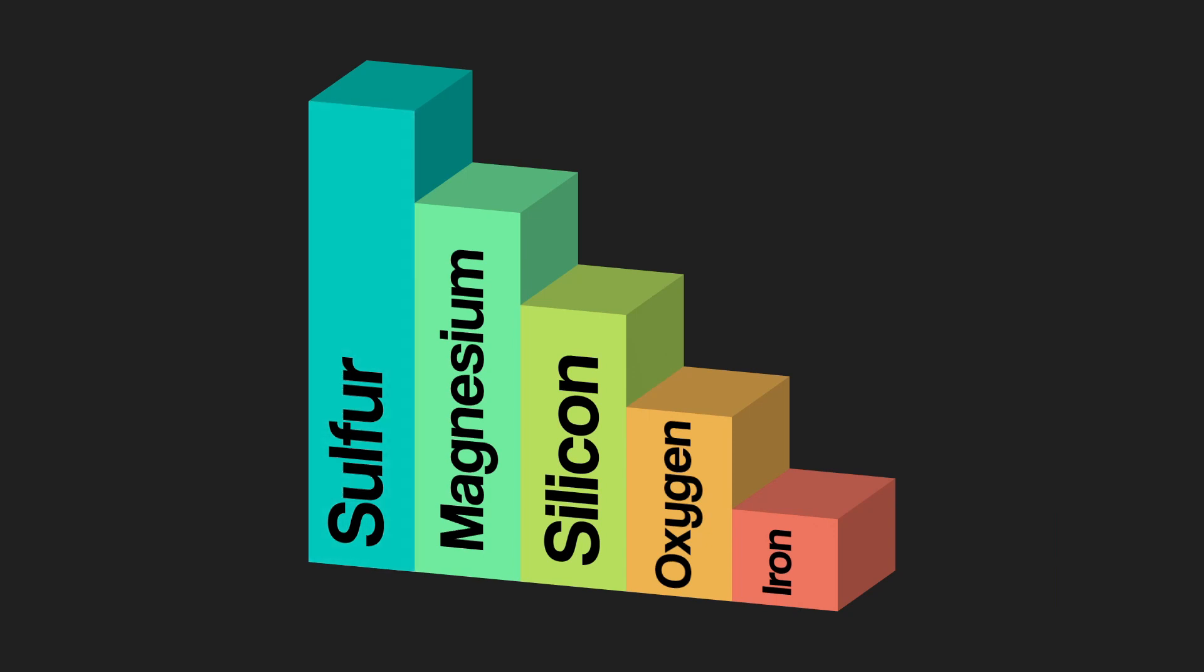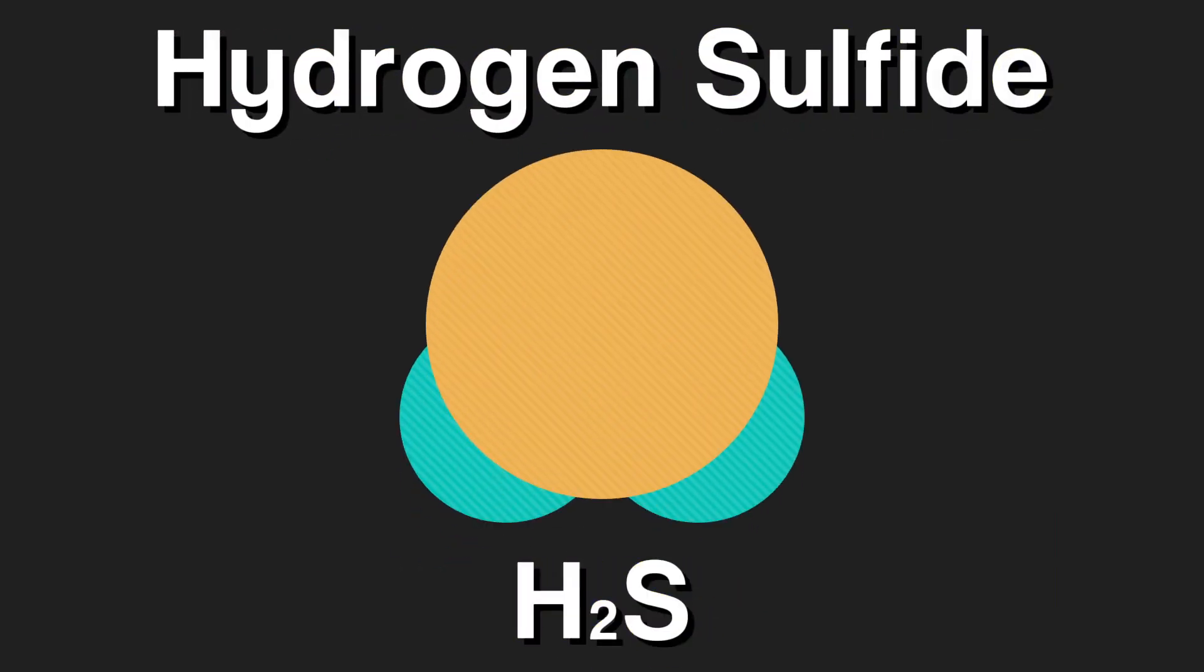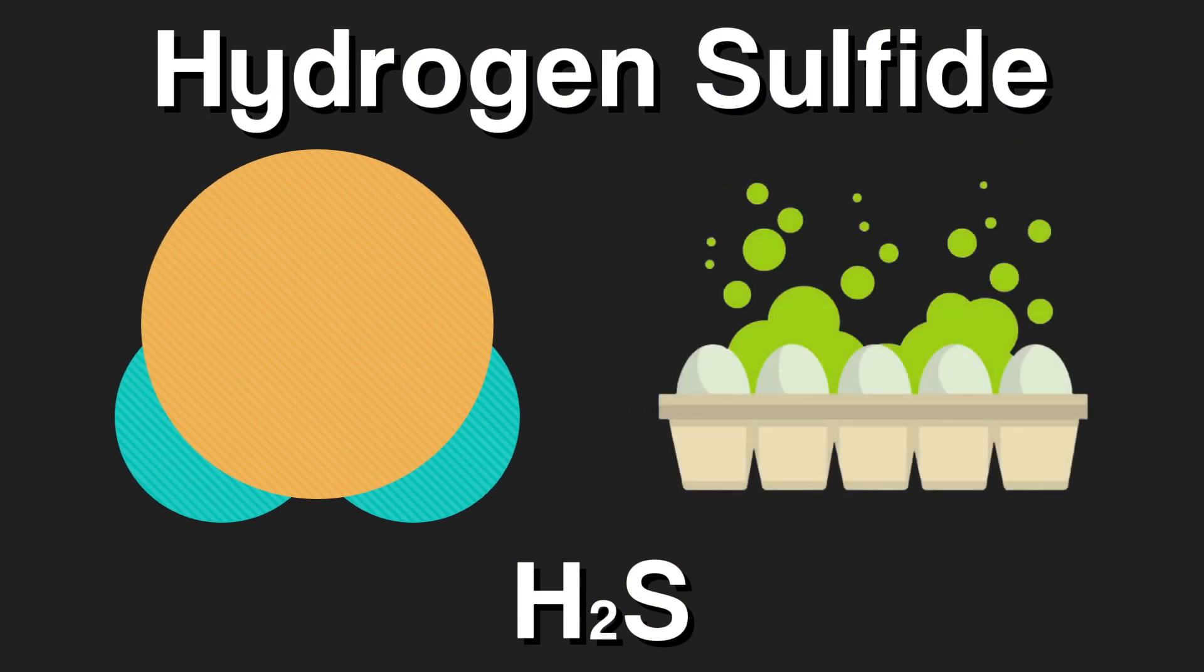Let's take a look at some compounds. Hydrogen sulfide is a poisonous and toxic gas that gives off a smell of rotten eggs.